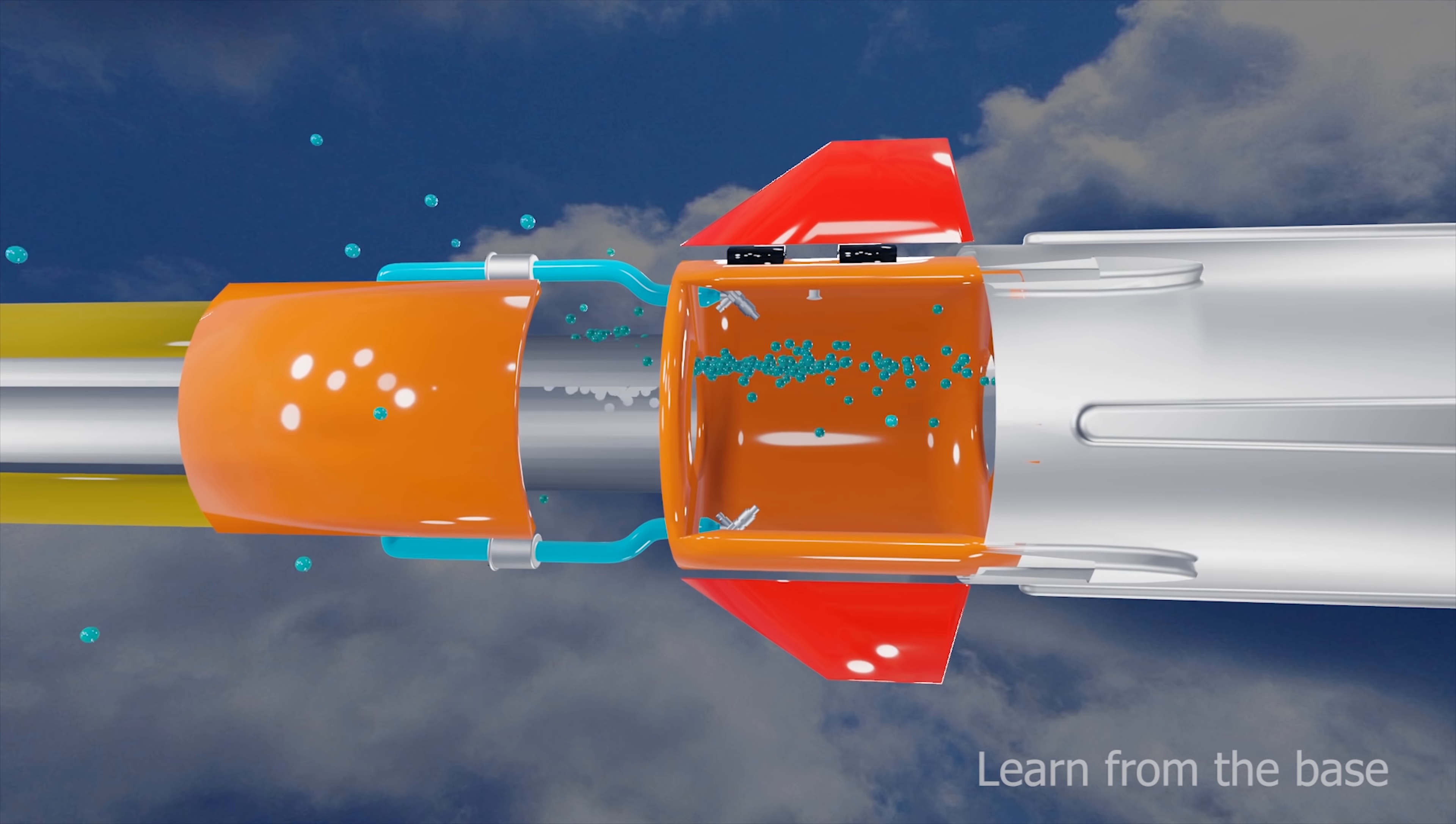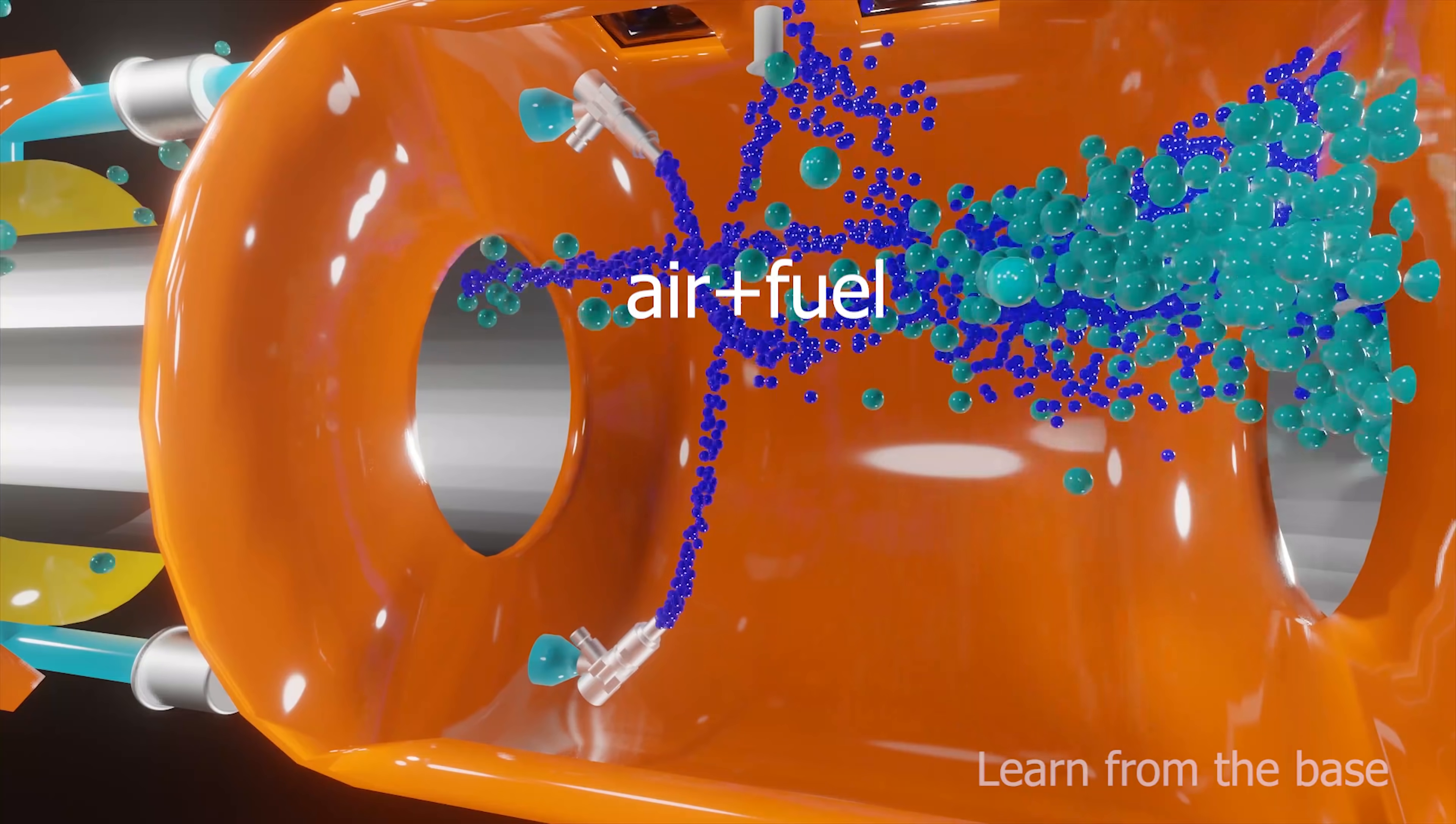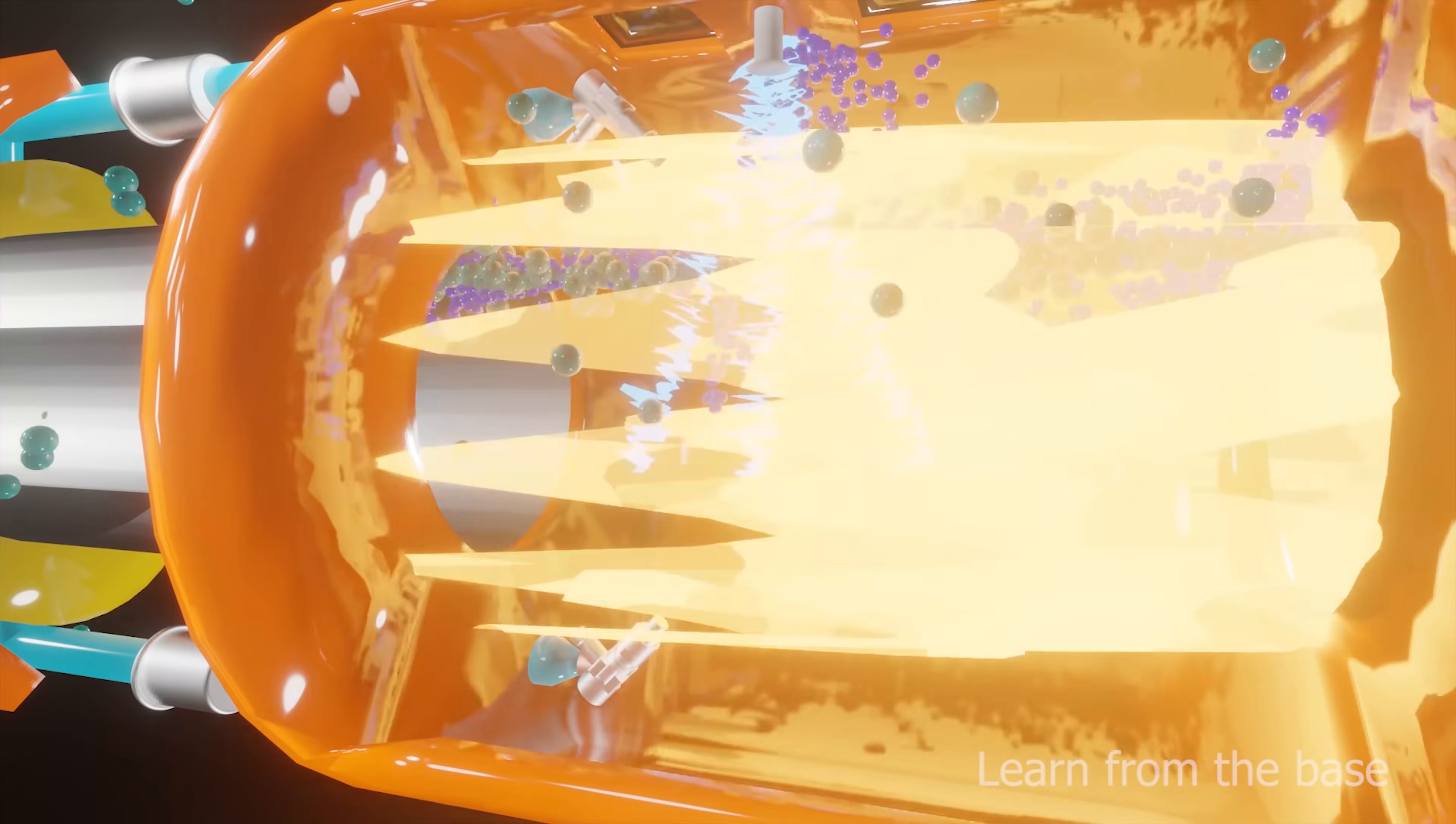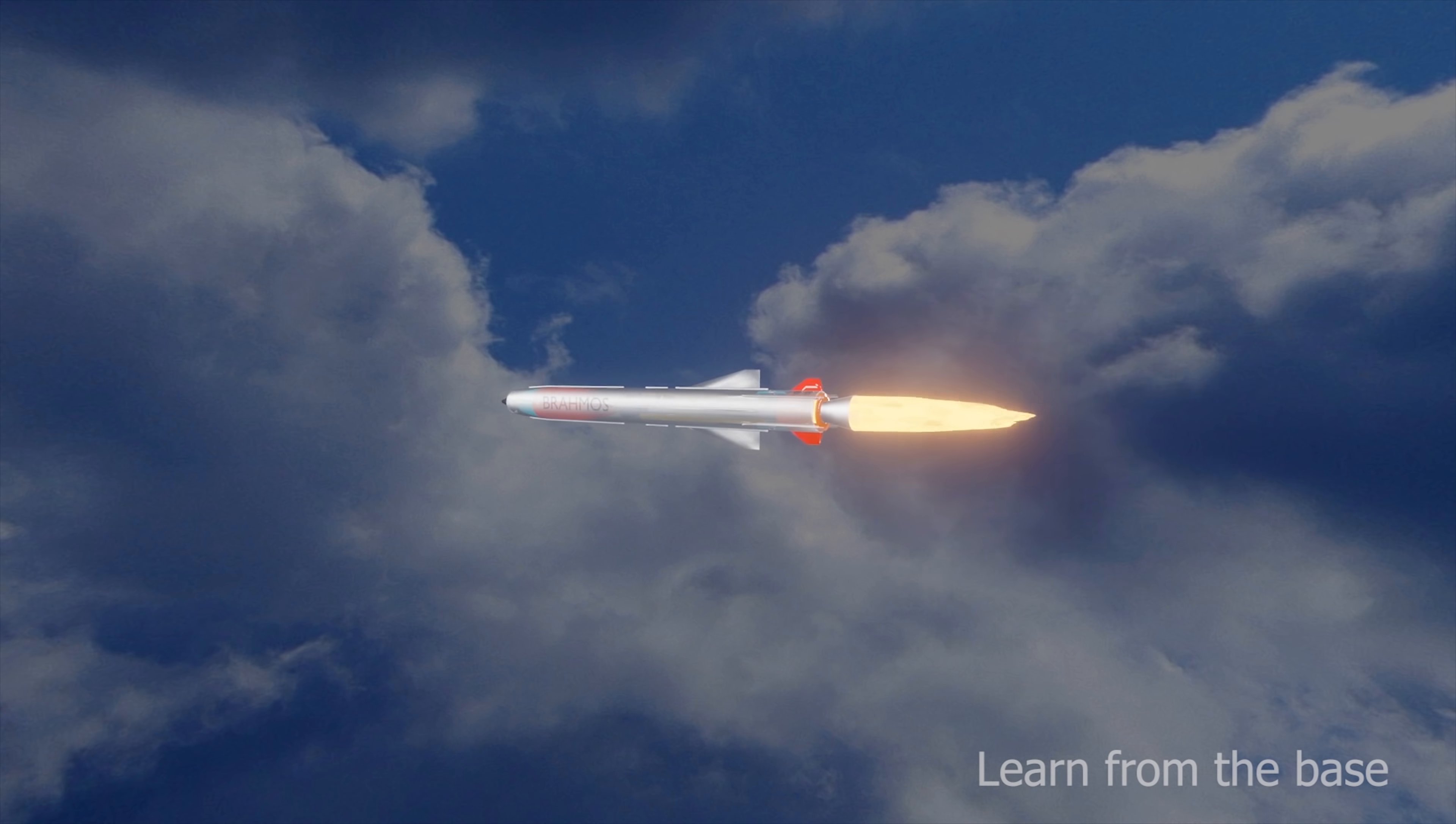In the combustion chamber, fuel is sprayed by the fuel injector. With the help of an igniter, the air-fuel mixture is ignited. Due to the ignition, combustion takes place. Due to the combustion, a force or thrust is produced in the opposite direction. This thrust propels the missile.